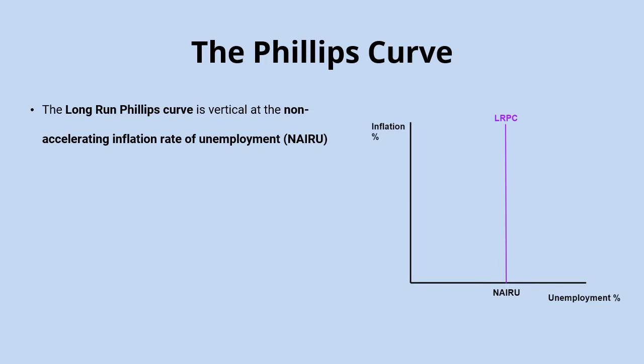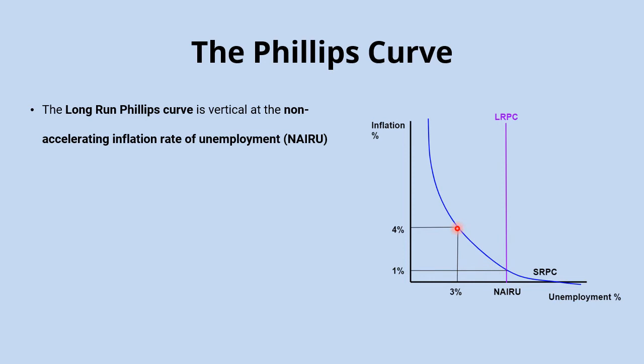Sometimes that's known as the natural rate of unemployment. If we add a short-run Phillips curve onto the same diagram and imagine the economy is initially operating at the NIRU — say that's five percent unemployment — on the diagram the rate of inflation is one percent. Imagine a government that wants to bring down unemployment using expansionary fiscal policies and they get that down to three percent.